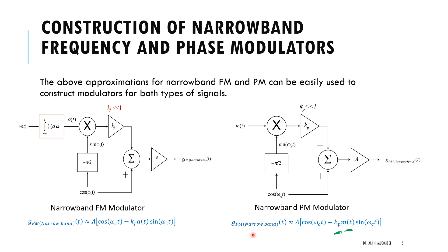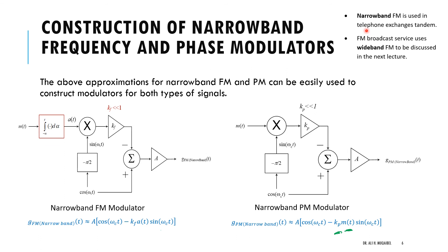In this part of the lecture we learned how to rewrite the general FM signal using series expansion to find its bandwidth, arriving at two expressions for narrowband FM and PM which should be memorized. We also showed how to build the block diagram generators — called narrowband angle modulators or FM and PM generators. In coming lectures we'll use these narrowband generators to build wideband generators. Narrowband FM is used in telephone exchange tandems, while FM broadcast uses wideband — but we always start with narrowband.